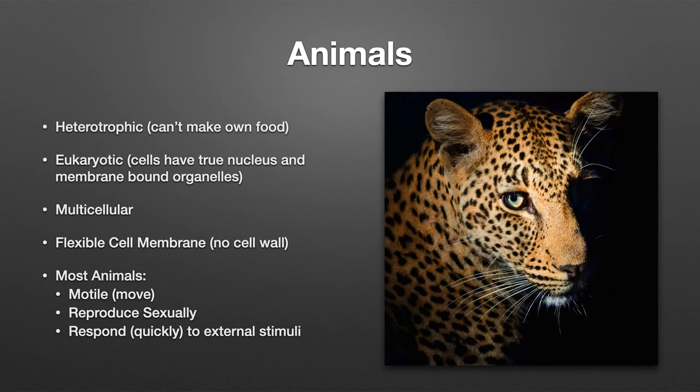We're going to talk about animals, and in particular today's topic is invertebrates — organisms that are animals that don't have a backbone. It's a big broad group of things; it's technically not a class, part of our classification scheme. But first we're going to start with just a general definition of an animal. Animals are heterotrophic, eukaryotic, multicellular creatures.